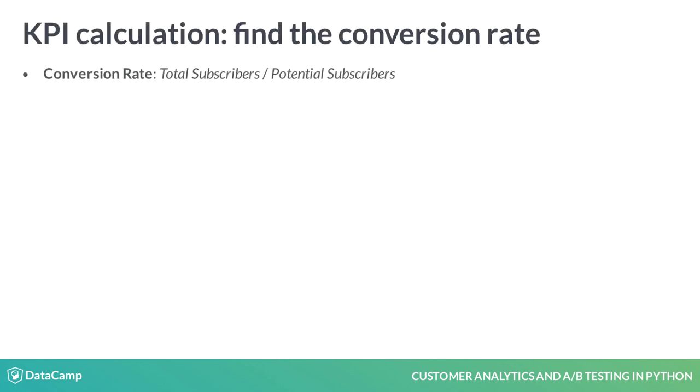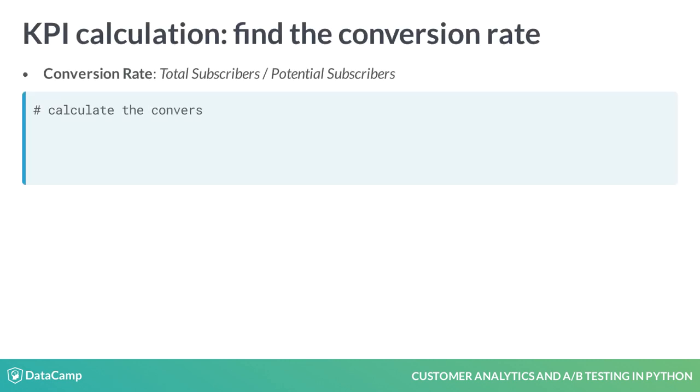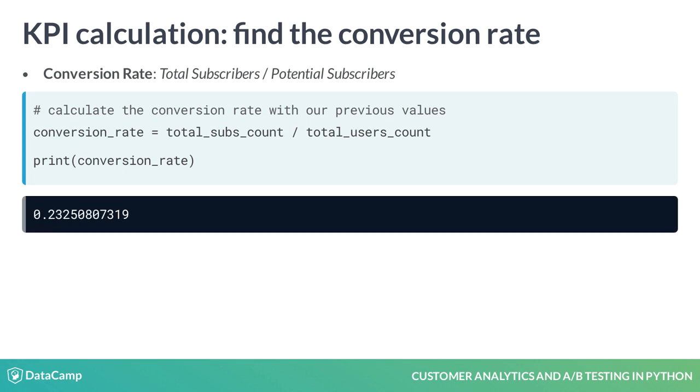Finally, we need to divide our subbing user number by our total number to see we have a first week conversion rate of 23.2 percent.